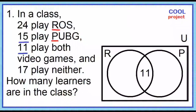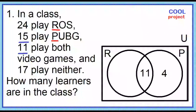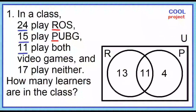15 play PUBG. Since we already have 11, 15 minus 11 is 4. Place 4 in circle P. 24 play RAWS. Since we already have 11, 24 minus 11 is 13. Place 13 in circle R.